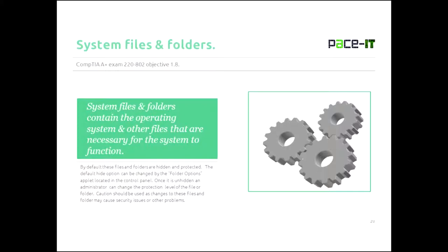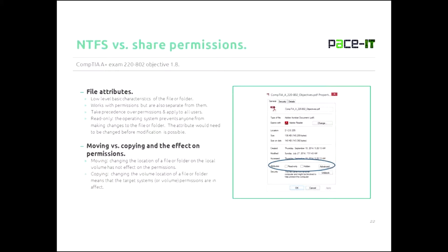There are different kinds of permissions and privileges, but first let's talk about file attributes. Every file and folder has some basic attributes — these are the first basic set of permissions that get applied. File attributes do work with permissions but are completely separate from them. File attributes take precedence — they come first and will override any permissions placed on a share.